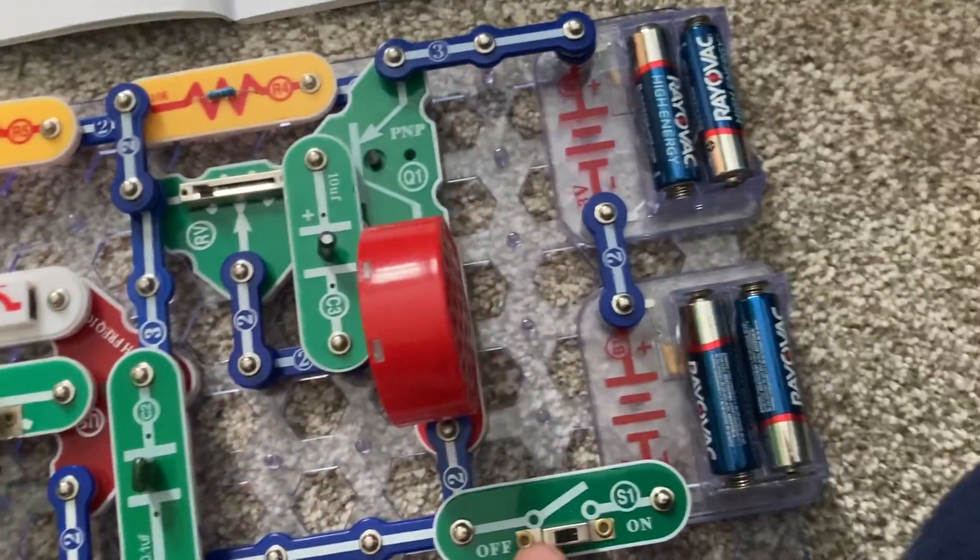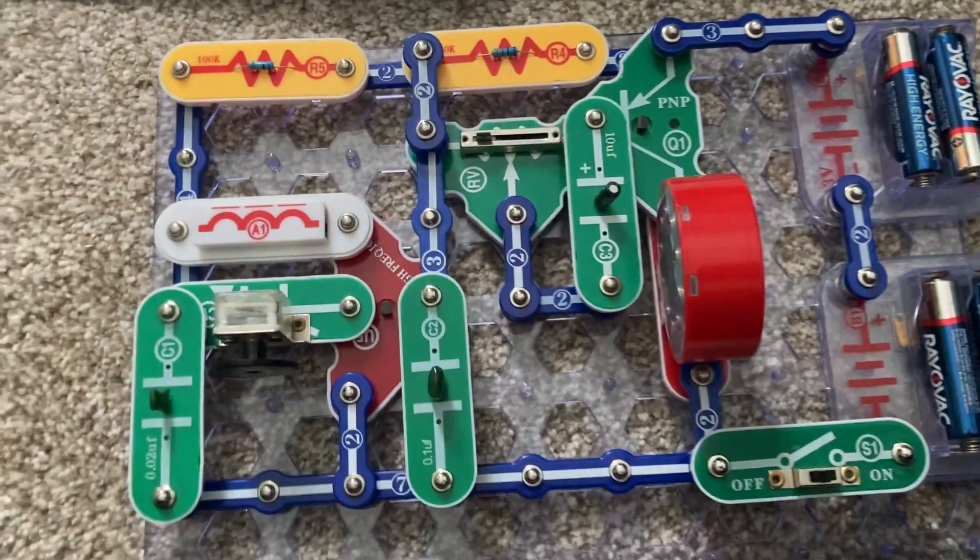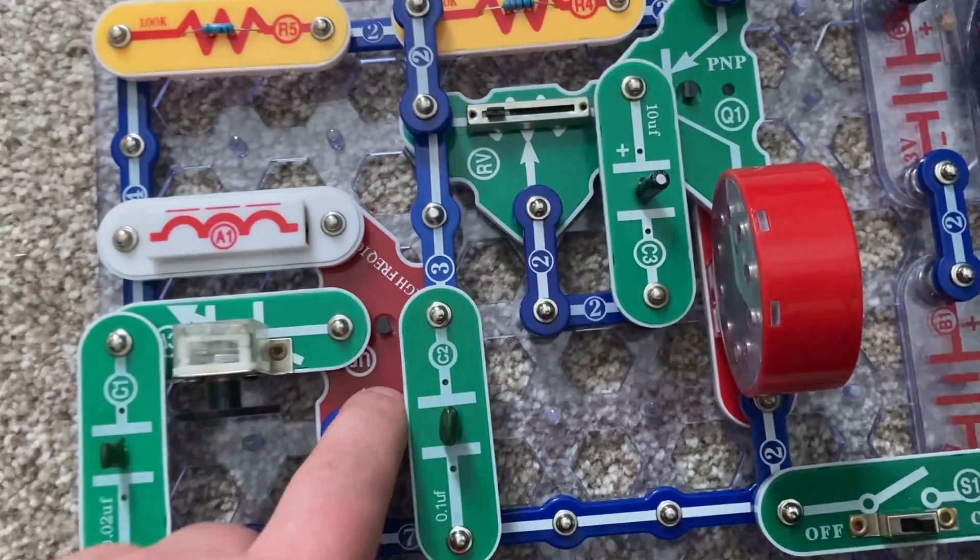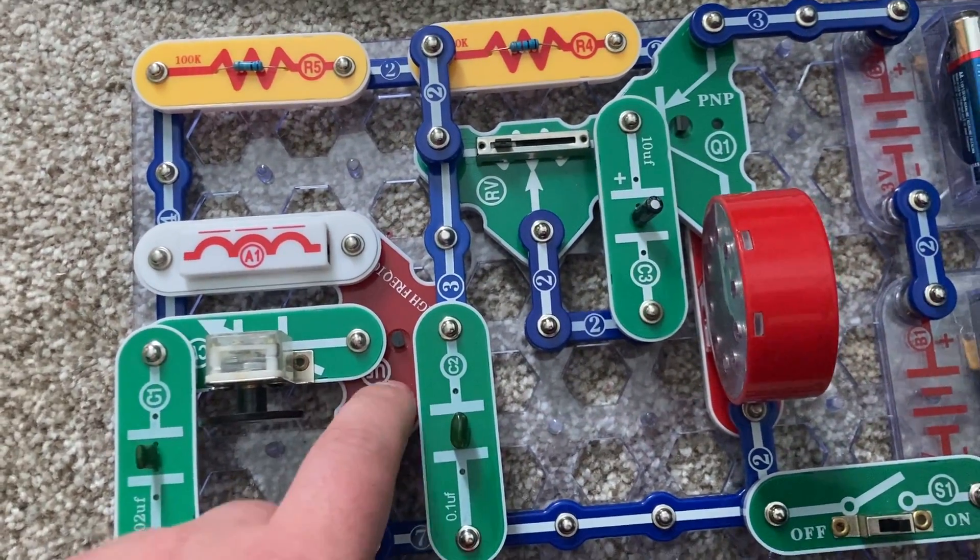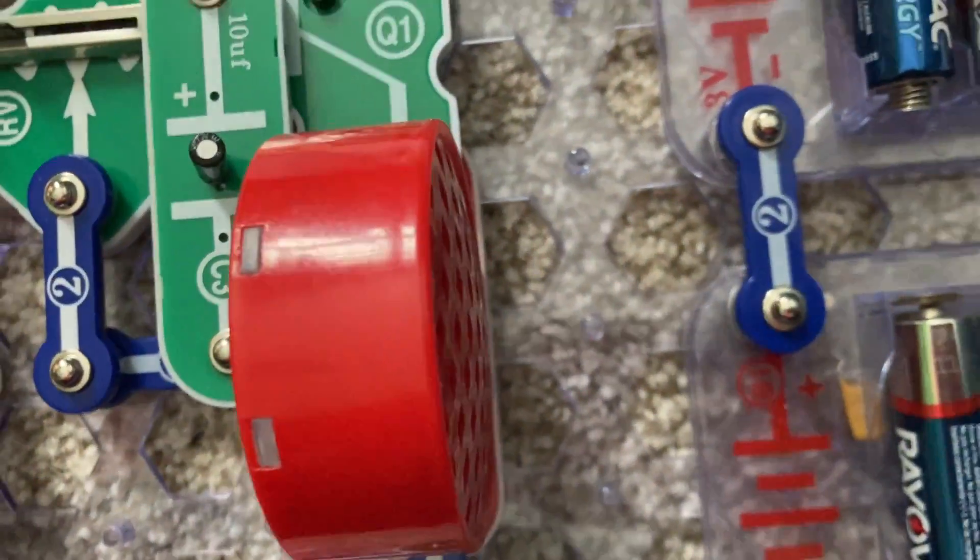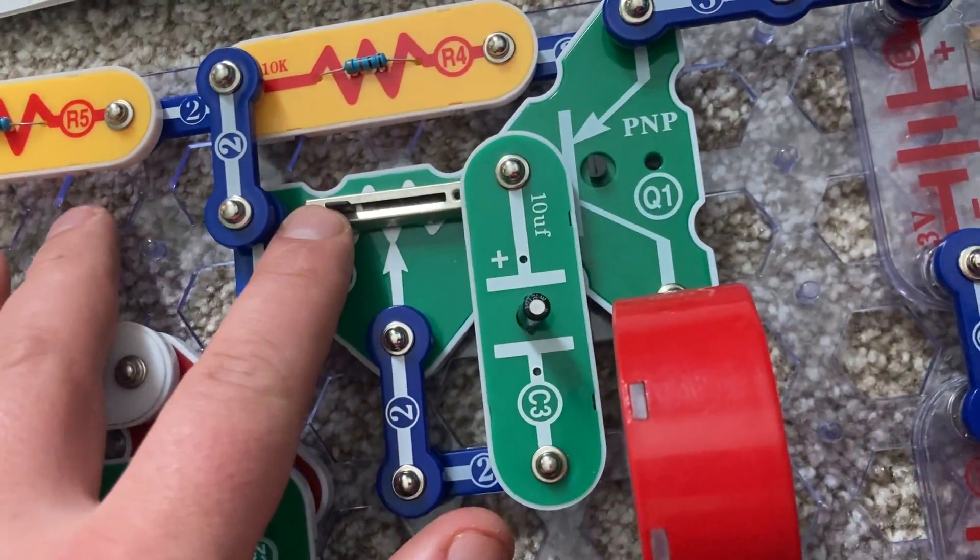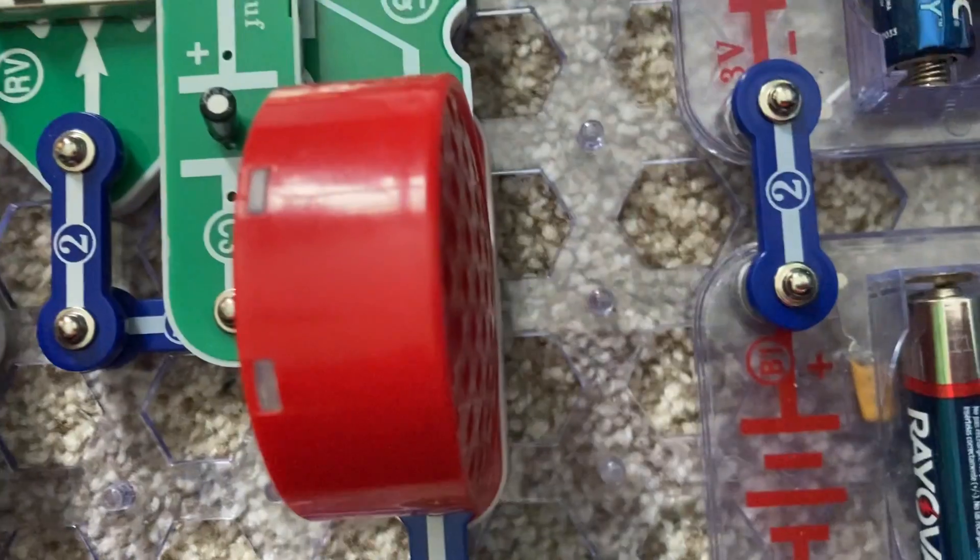This is a very crude version of an AM radio using only one integrated circuit, the high-frequency one, and it's not very loud, even though you have the RV to control the volume.